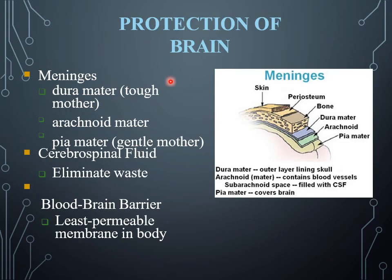The brain is protected by different layers. The meninges contain three regions: the dura mater, the arachnoid mater, and the pia mater. The dura mater is basically the outer layer lining the skull. The arachnoid mater contains blood vessels, and the subarachnoid space is filled with cerebrospinal fluid. The pia mater covers the brain directly.